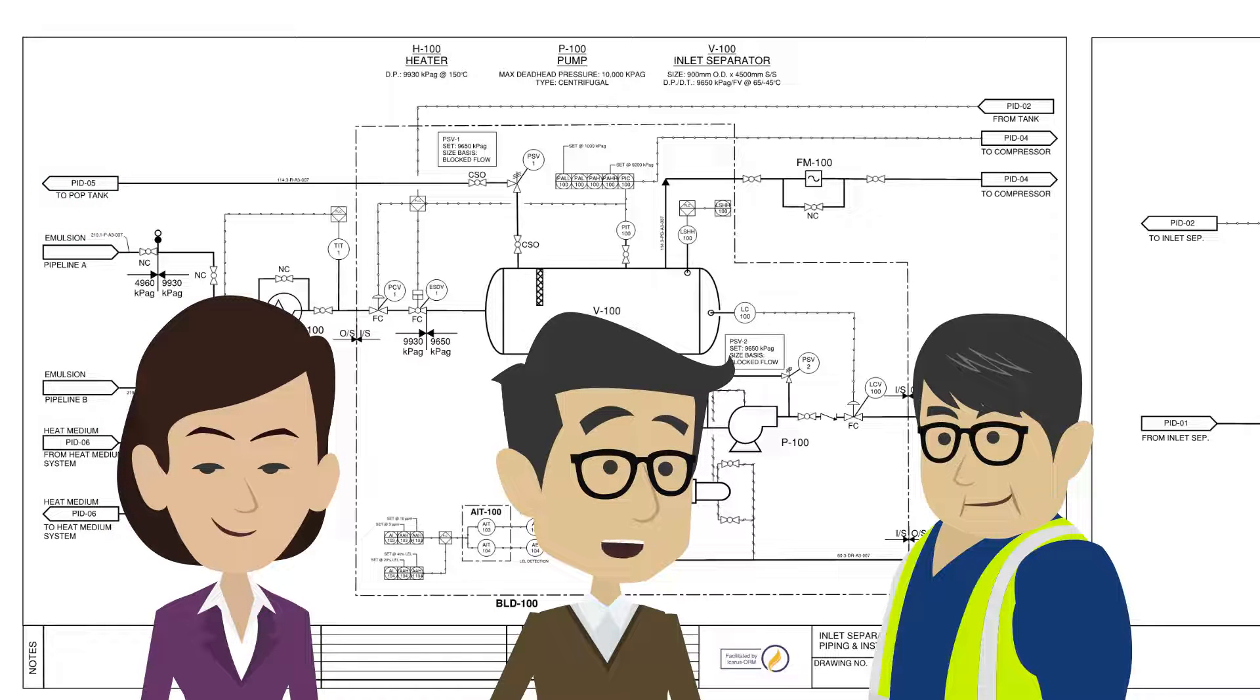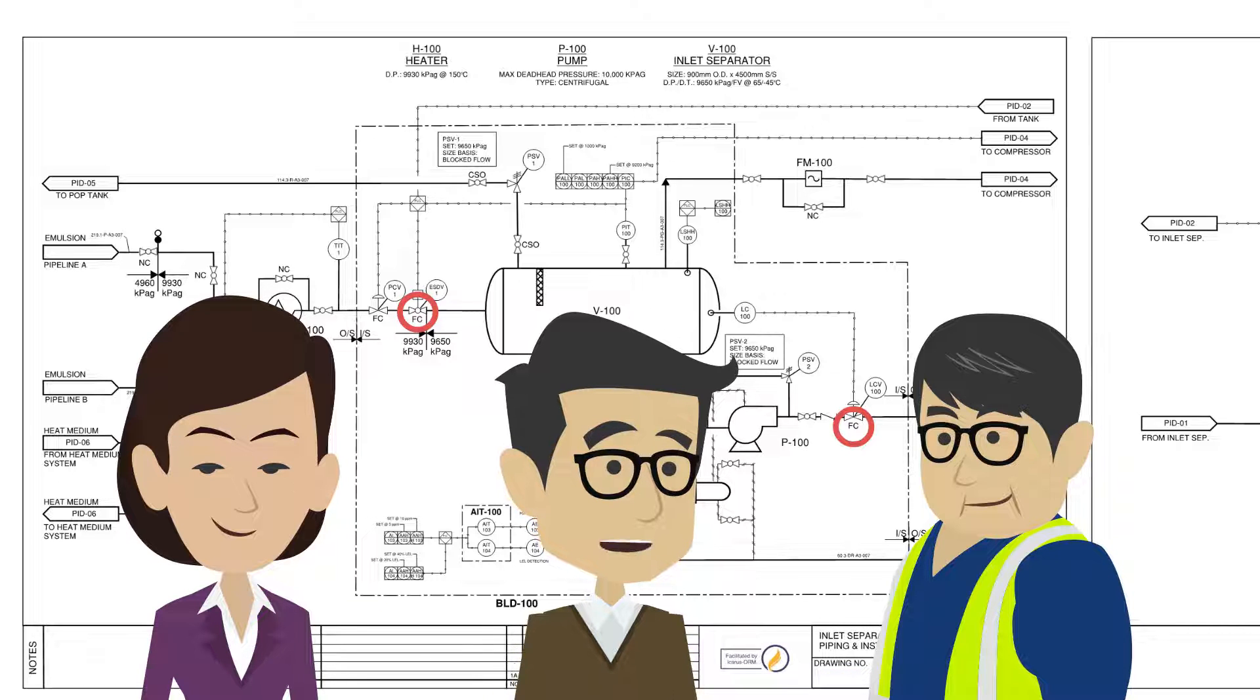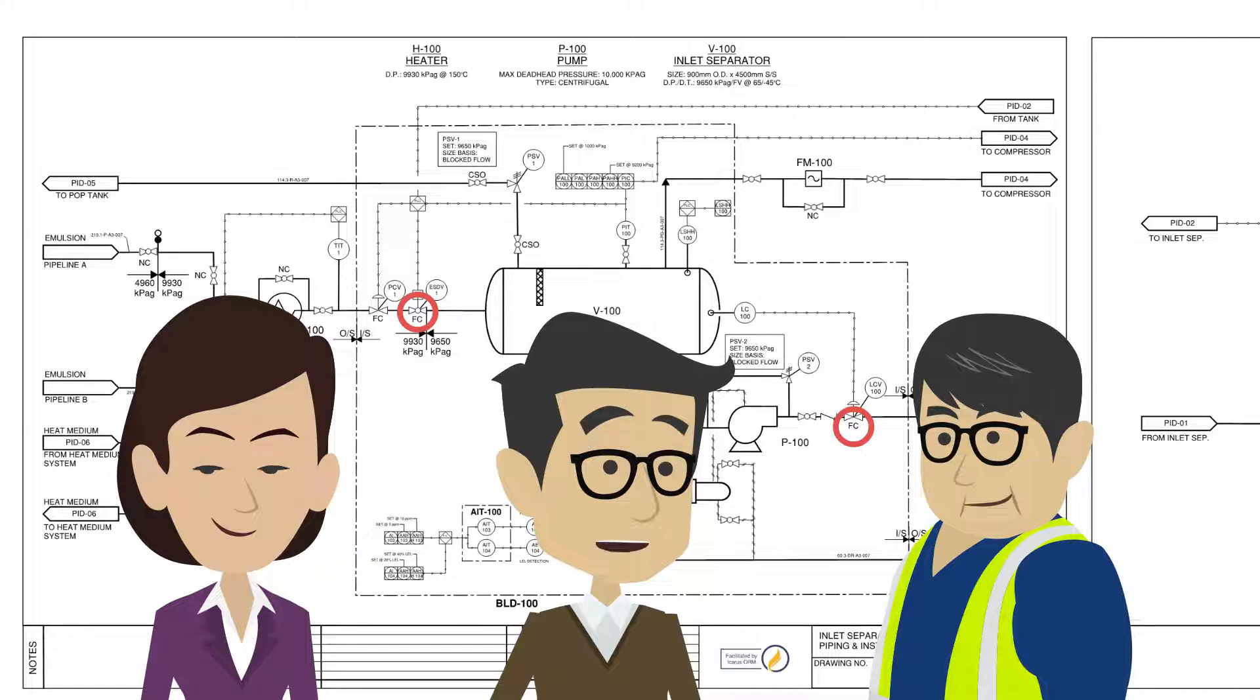Great. Continuing on, another detail to pay attention to on the PNIDs are the fail positions of valves. The fail positions indicate what position a valve will default to during a shutdown of the facility. Fail positions should be indicated on the PNIDs and should bring the site to a safe state in the event of an emergency shutdown or loss of power.